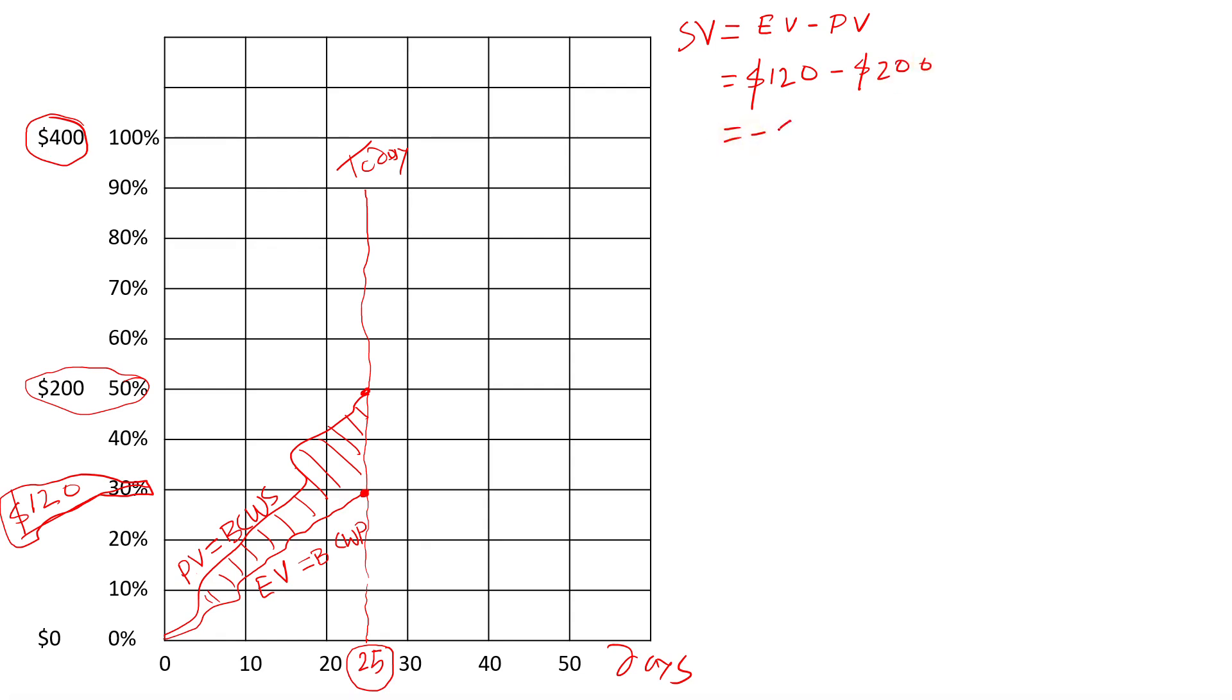We only accomplished $120 worth of value, but we're supposed to finish by now $200 worth of value. We are about negative $80. The dollar value is not that important here. What is important is that negative sign, which indicates that we are behind schedule. We're not doing so well in terms of finishing the project on time.